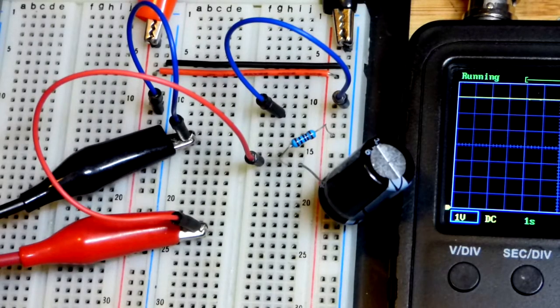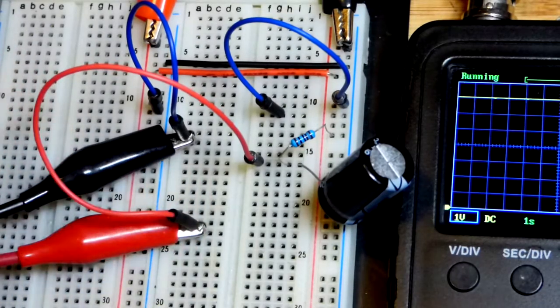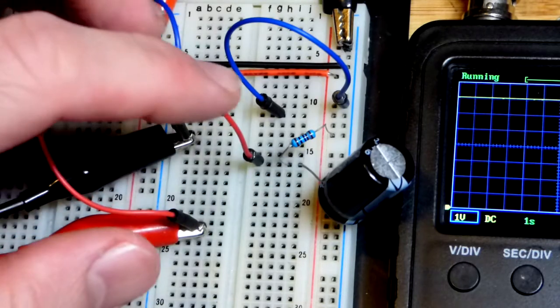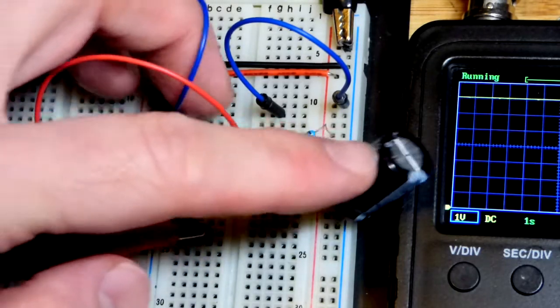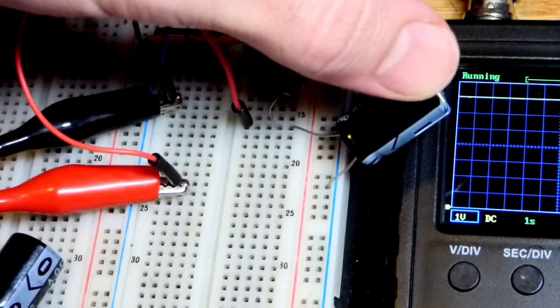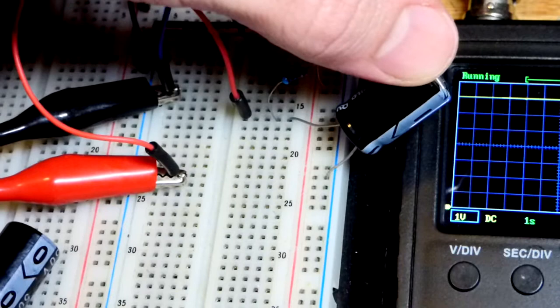In my last couple videos we looked at charging super capacitors with my power supply at relatively high current. Now we're going to look at a smaller scale version of that. It works basically the same except you're dealing with less current.